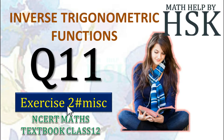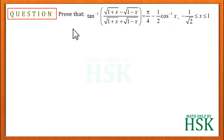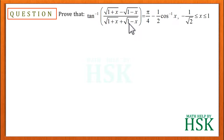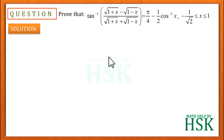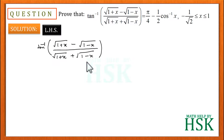Taking question number 11 of miscellaneous exercise of chapter 2, inverse trigonometric functions. The question is: prove that tan inverse of square root of 1 plus x minus square root of 1 minus x, whole upon square root of 1 plus x plus square root of 1 minus x, is equal to pi by 4 minus 1 by 2 cos inverse of x. To solve this, we take the left hand side.